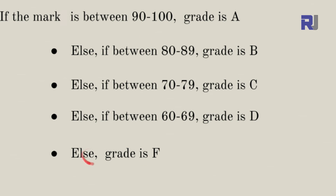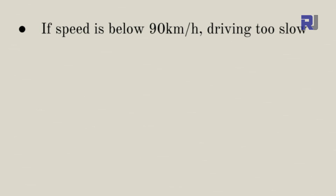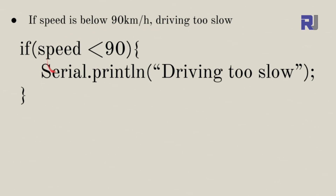Now let's see how to implement this in Arduino. The line 'if speed is below 90 km/h, action is driving too slow' is written as: if speed is less than 90 — where speed is a variable, maybe read from a laser sensor — then we print 'driving too slow.' The comparison is made against the number 90.